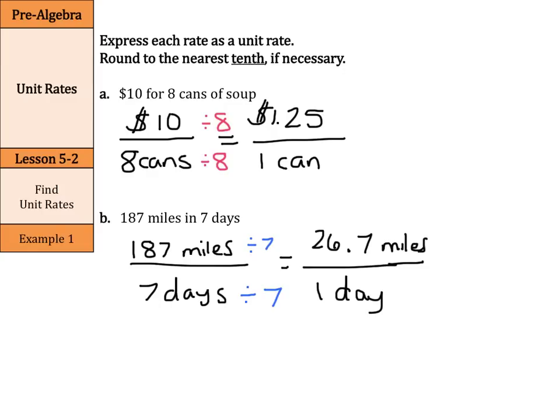Units are really important here. Don't just say 125 over 1 or 26.7 over 1. Use the units, and since a rate is a ratio and a ratio compares two quantities, just leaving your answer as 125 or 26.7 is not good unless you used $1.25 per can or 26.7 miles per day. You need to have the units or you need to write it as a ratio.